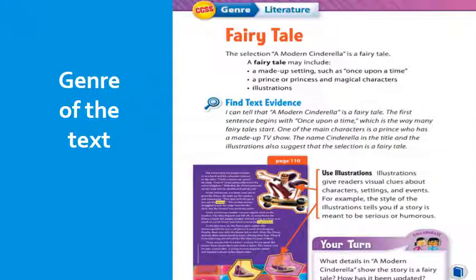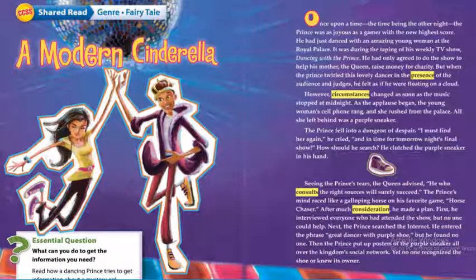Now we have a new genre: the fairy tale. A fairy tale is not real — it comes from our imagination. Our selection, A Modern Cinderella, is a fairy tale because it includes a made-up setting that could not be real, such as 'once upon a time,' a prince or princess, and magical characters. You also find illustrations — these pictures in the story are called illustrations. Now that we've been introduced to the genre, let's start reading the story.